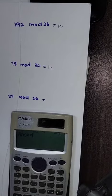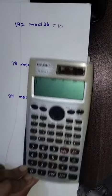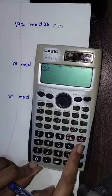Now the third question: 24 mod 26. Repeating the same process, we divide 24 by 26.